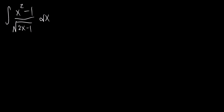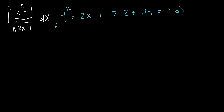To start off we can make a substitution. I'm going to set t squared equal to 2x minus 1, which means that 2t dt equals 2dx. There's some nice cancellation here, and we're left with t dt equals dx.